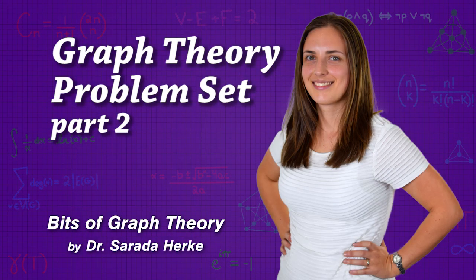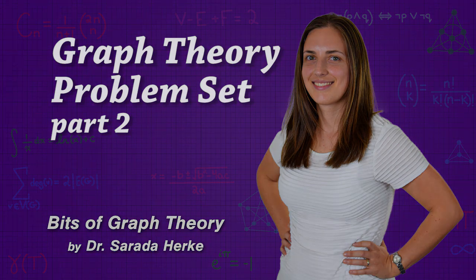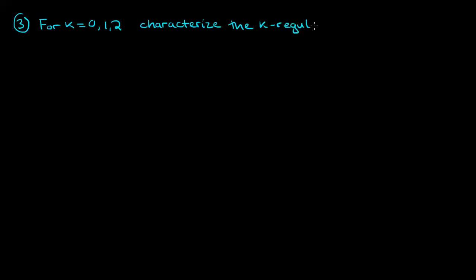So now we're ready to look at our next problem. For k equal to zero, one, and two, characterize the k regular graphs. The key thing to remember is that a k regular graph is a graph in which every vertex has degree k. What we mean by characterize is to get an if and only if statement, so that we know that a graph is zero regular if and only if some property.